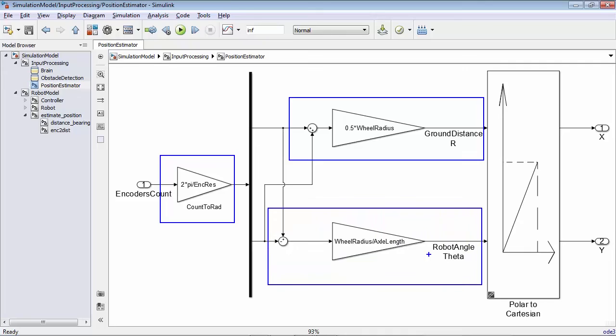On the lower part, the difference between left and right wheel angles is used to estimate the self-rotation of the robot.